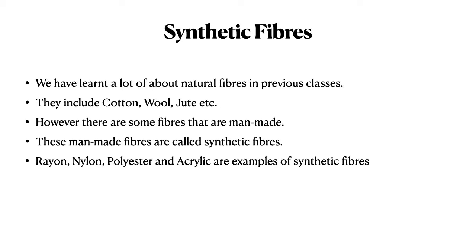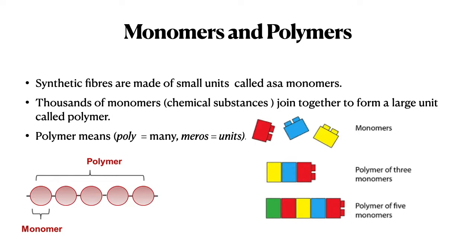Fibers can be natural or synthetic. In previous classes we covered natural fibers; in this chapter we'll see synthetic fibers — their examples, how they are made, and which are most common. The different kinds of synthetic fibers are rayon, nylon, polyester, and acrylic. Before getting into each one, we need to know what monomers and polymers are. Synthetic fibers are made of small units called monomers.